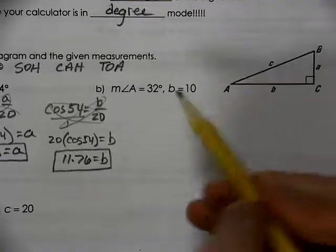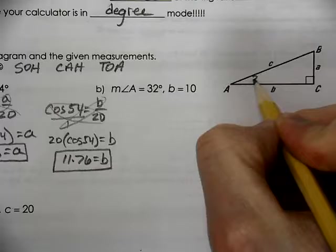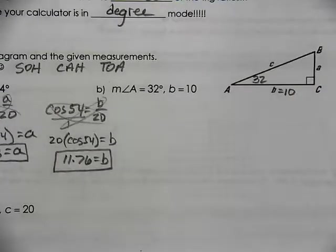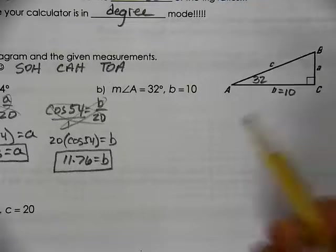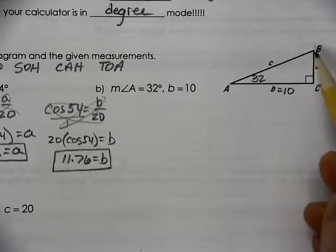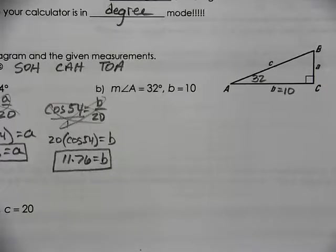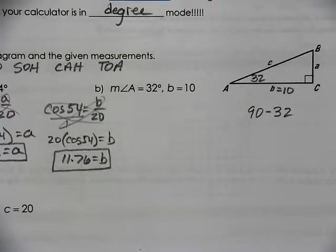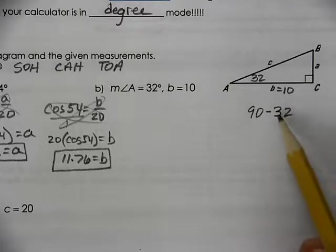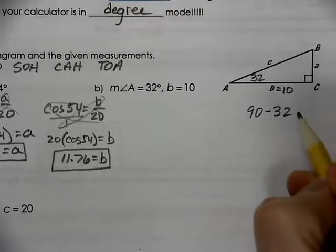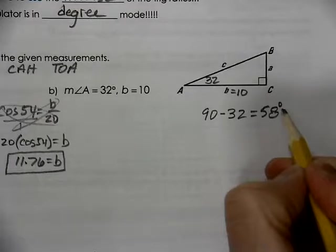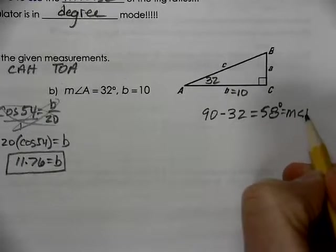Let's try that again. Angle A, in this case, is 32. Side B is 10. We have to find out the other angle and the other two sides. Recall that the acute angles of a right triangle are always complementary. So 32 and what makes 90? So we subtract 32 to get 58 degrees. And that gives us the measurement of angle B.